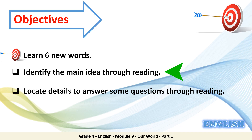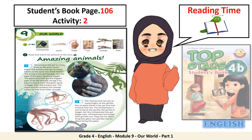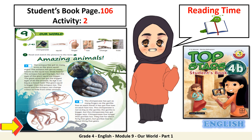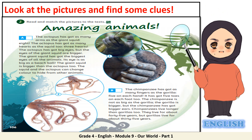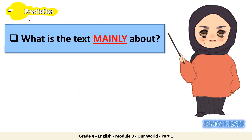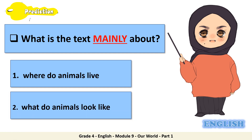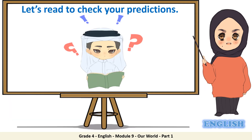It's reading time. Turn to your student's book page 106, activity number 2. Look at the pictures and find some clues. These clues can help you with answering more questions to come. Now for a very tricky question: what is the text mainly about? Let me give you some options. Option 1: where do animals live? Option 2: what do animals look like? Let's read to check your predictions.